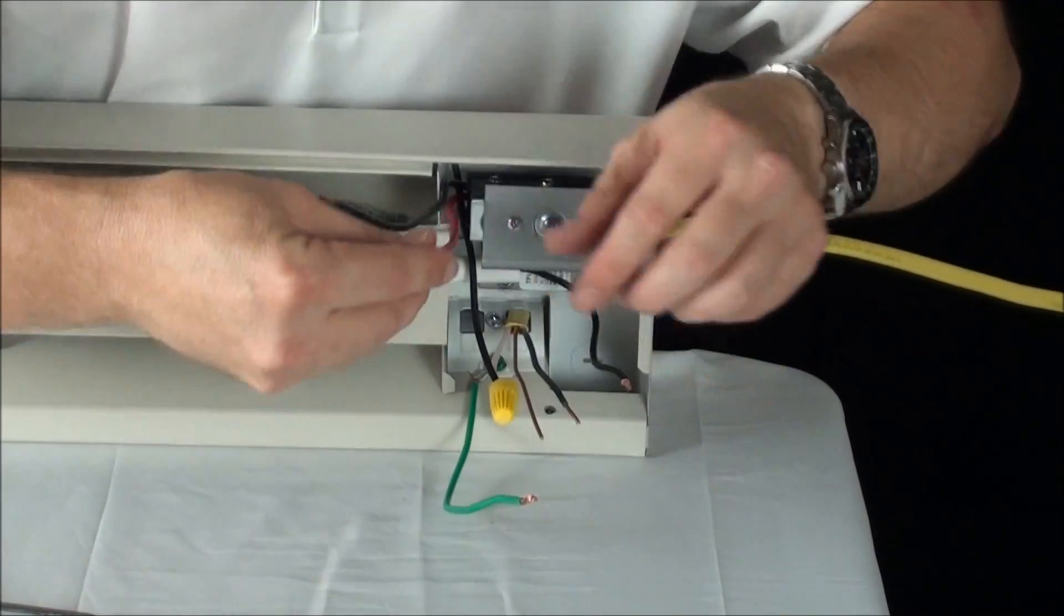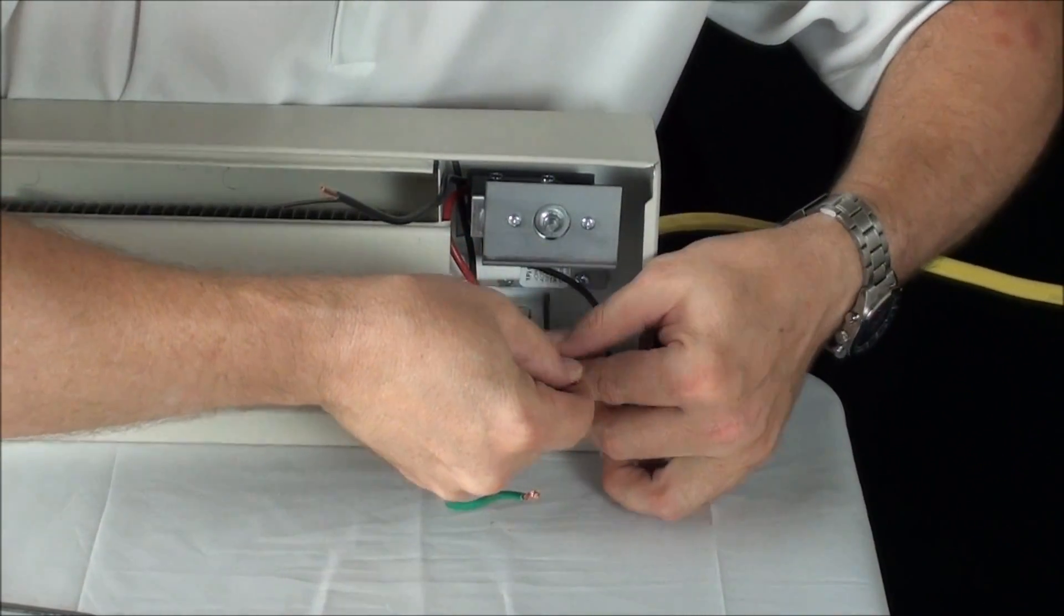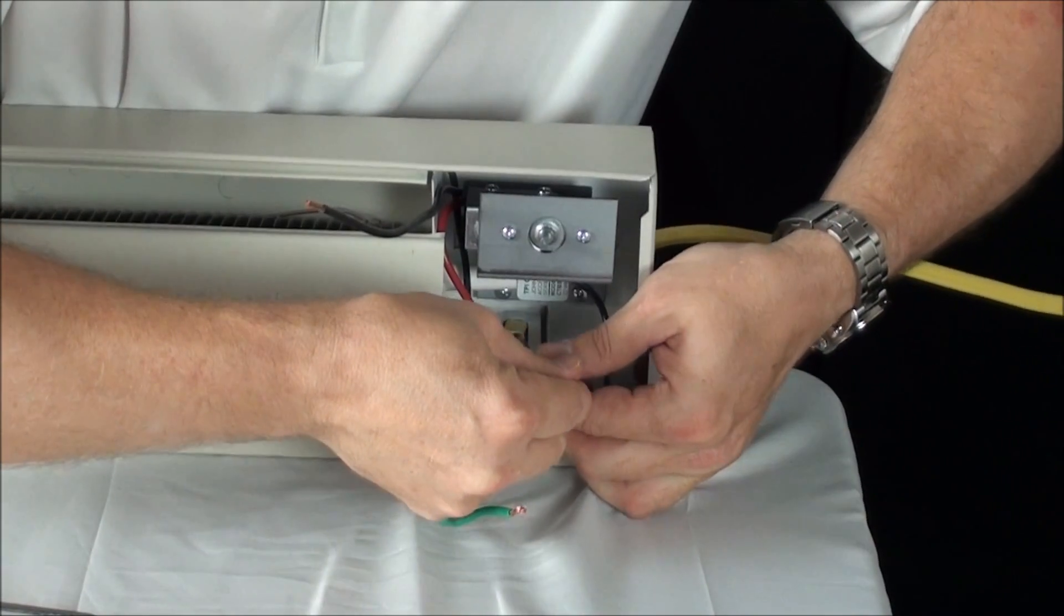Next, hook the red wire from your thermostat to the black or red power wire from your power source.